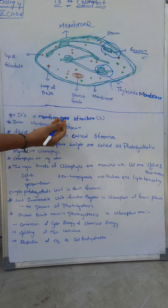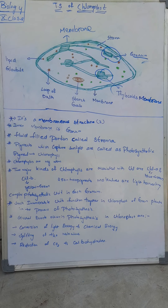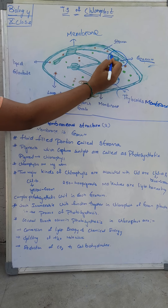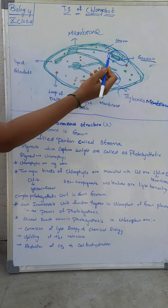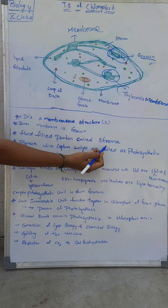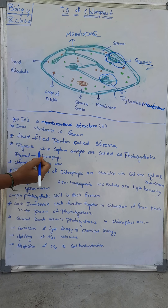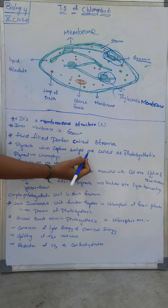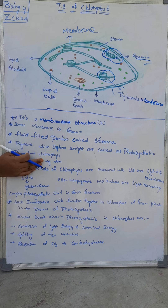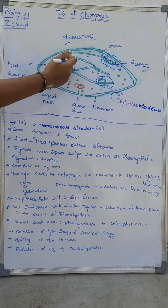The chloroplast is a membrane structure. The inner membrane is called the granum, and the fluid portion is called the stroma. Pigments which capture sunlight are called photosynthetic pigments. Light energy is converted into chemical energy by these pigments.